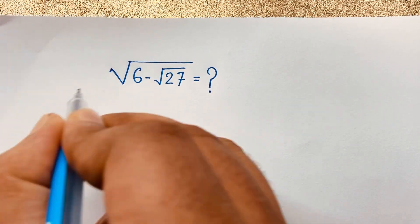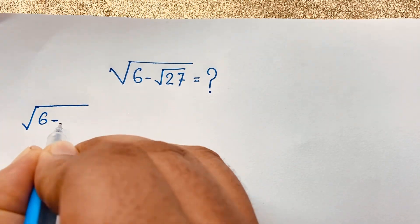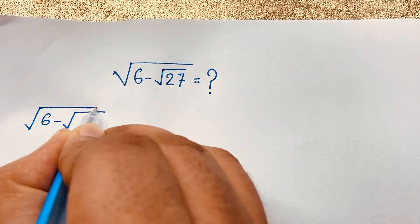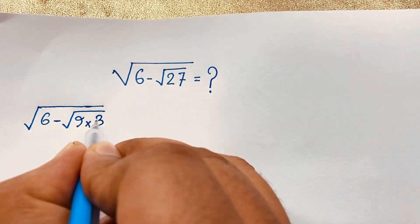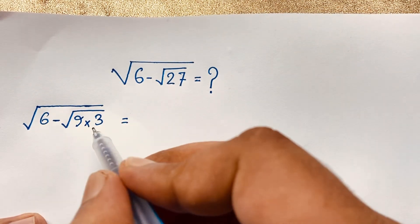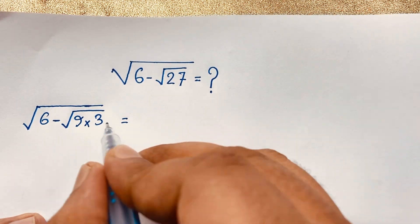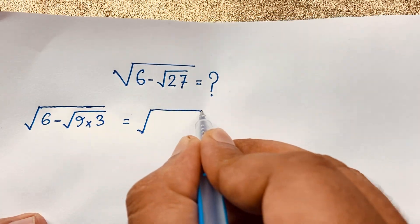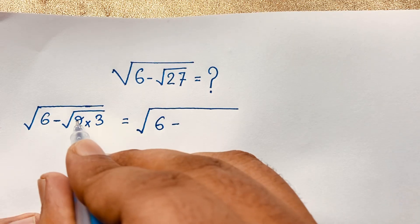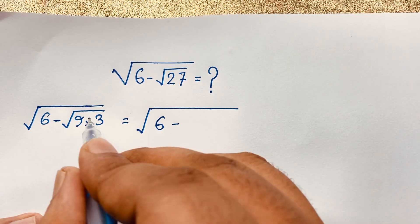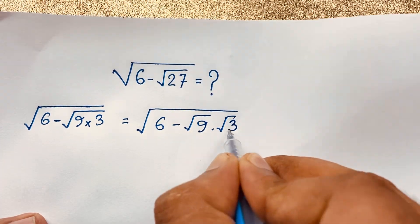Let's start the solution. Our expression is square root of 6 minus square root of 27. We know that 27 equals 3 times 9. Now, using the property that square root of (a·b) equals square root of a times square root of b, we get square root of 9 times square root of 3.